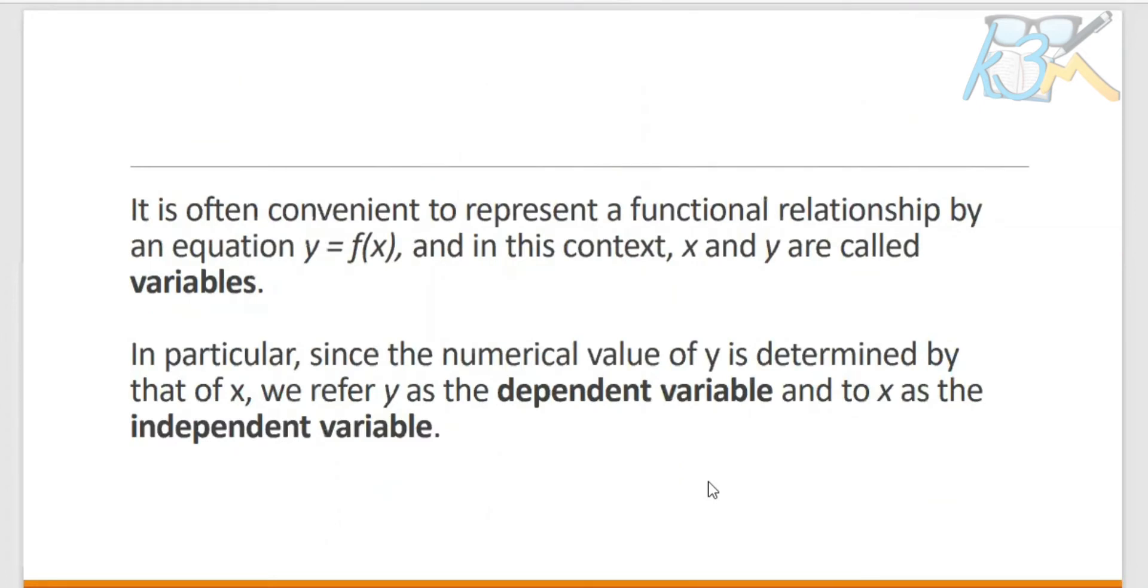It is often convenient to represent a functional relationship by an equation Y equals F of X. In this context, X and Y are called variables. In particular, since the numerical value of Y is determined by that of X, we refer to Y as the dependent variable and to X as the independent variable.